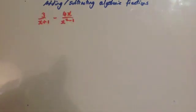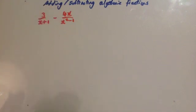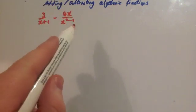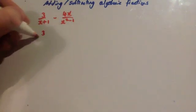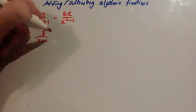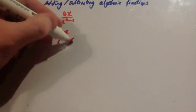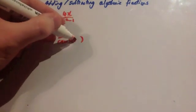We're now going to do another example: 3 over (x plus 1), take away 4x over (x squared minus 1). Just like multiplying or dividing fractions, try to factorize the top and bottom lines first. You can see x squared minus 1 is a difference of two squares, so you get 3 over (x plus 1) minus 4x over (x plus 1)(x minus 1).